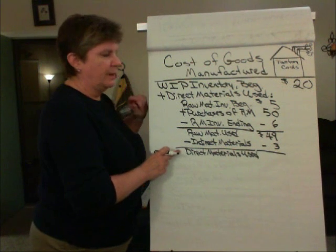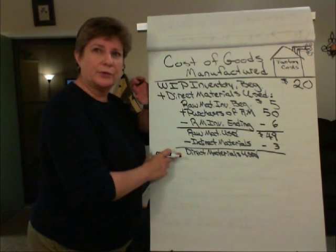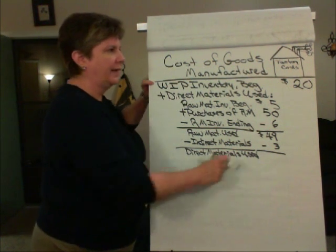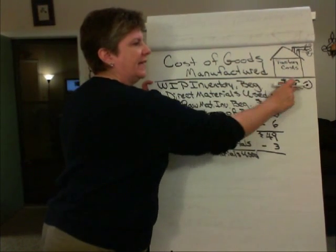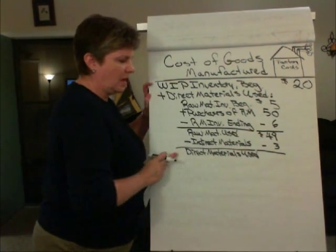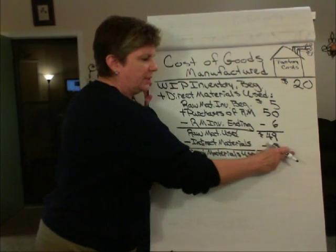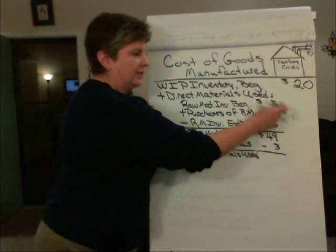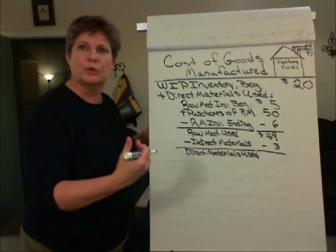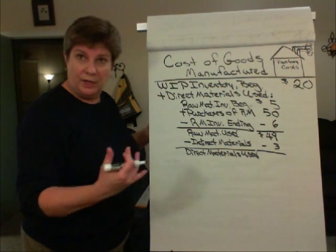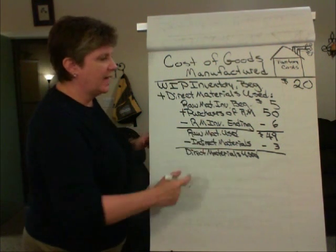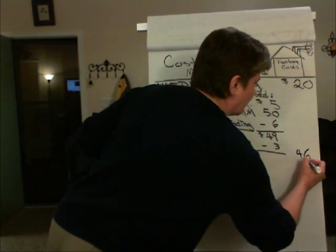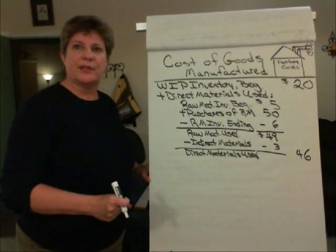Remember, on our cost flows, direct materials used were added to work in process inventory. My work in process beginning inventory is out in the far column, so I'm going to extend the direct materials used out to that far column instead of showing it here — it makes the numbers easier to read and follow the math. So, $49 minus $3, my direct materials used was $46, and I extend that $46 out to the far column.